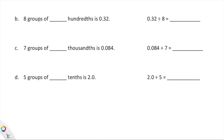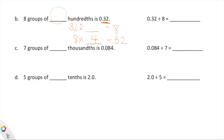We have: 8 groups of blank hundredths is 32 hundredths. So 32 hundredths is our final quantity. Eight groups of blank hundredths equals 32 — let's think about this. What is 32 divided by 8? Or: 8 times what equals 32? Hopefully you're rifling through your multiplication facts. Eight times four is 32, so eight groups of four hundredths is equal to 32 hundredths.